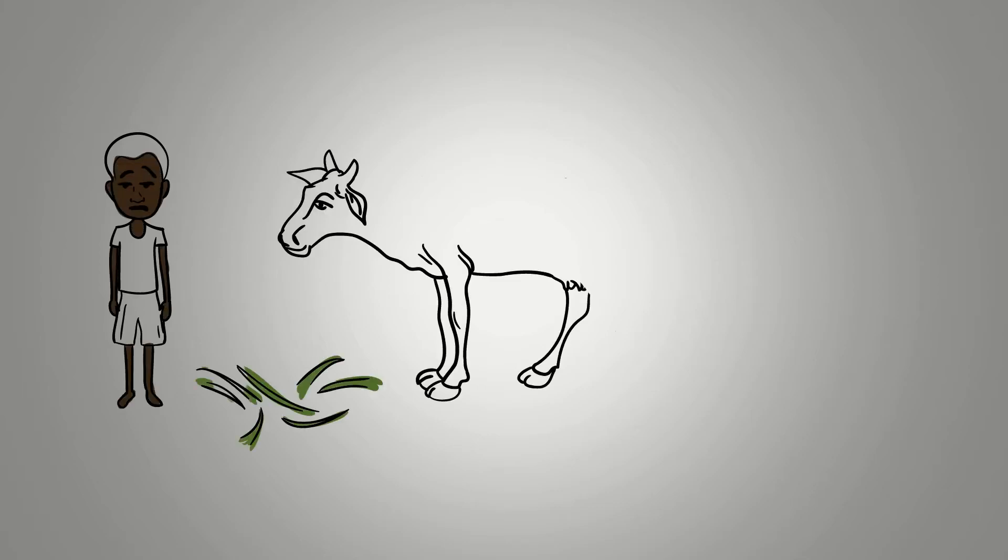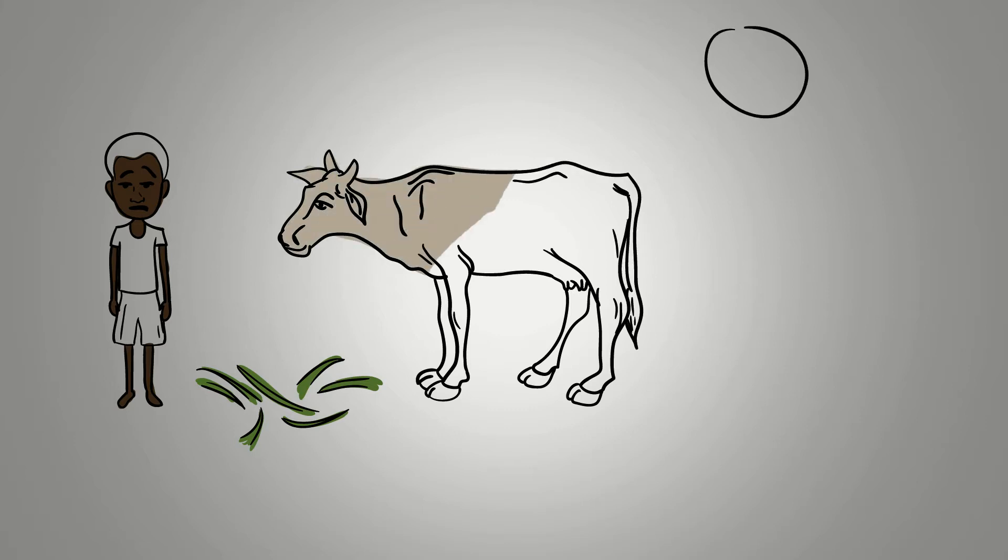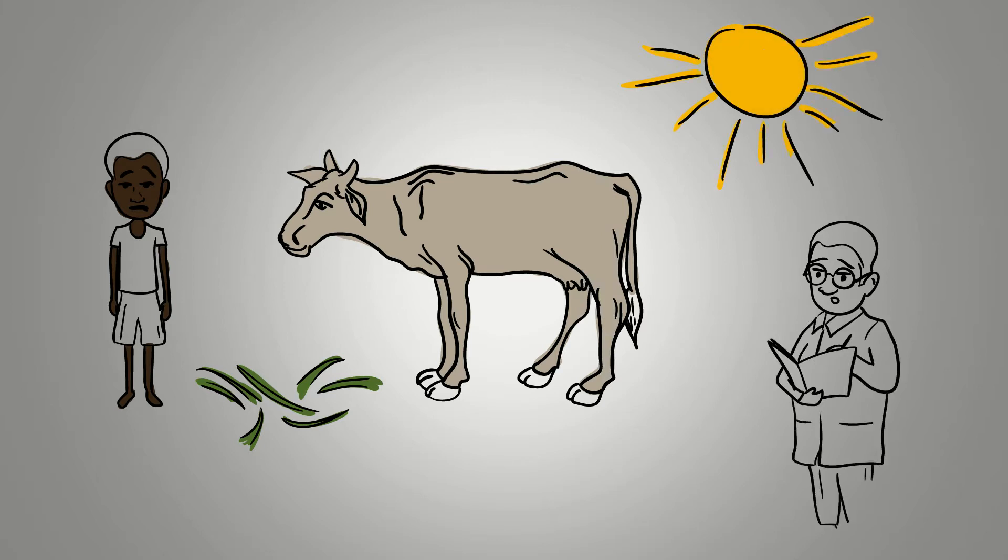Livestock keepers face lots of problems, often to do with feeding their animals. Researchers or development organizations can help, but it can be hard to pinpoint the problem. Which issue to be addressed first? What's the most important issue?